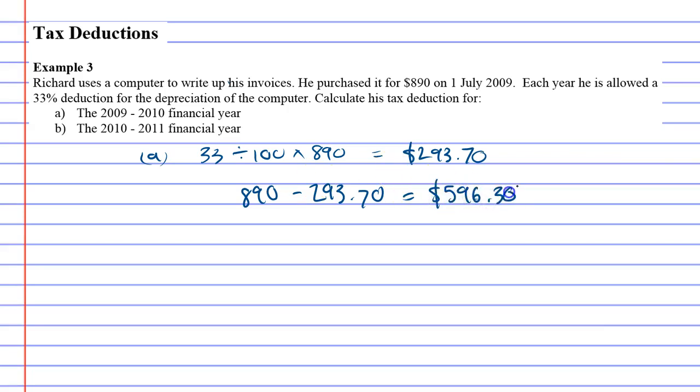So it's worth less than when you bought it new. Now we'll move to question B, which is the 2010 to 2011 financial year. This is basically the tax deduction for the second year. And once again it's 33% because it's decreasing in value by 33%, but this time we're going to times it by its new value.